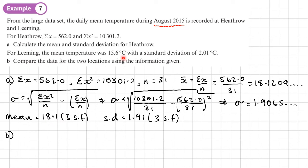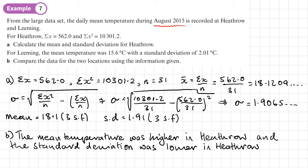So if we look at the mean temperature, we can see that the mean temperature for Heathrow was higher. And we could also say that the standard deviation of the temperatures was lower in Heathrow than it was in Leeming. Now, you could also write these sentences the other way around. So the mean temperature was lower in Leeming.